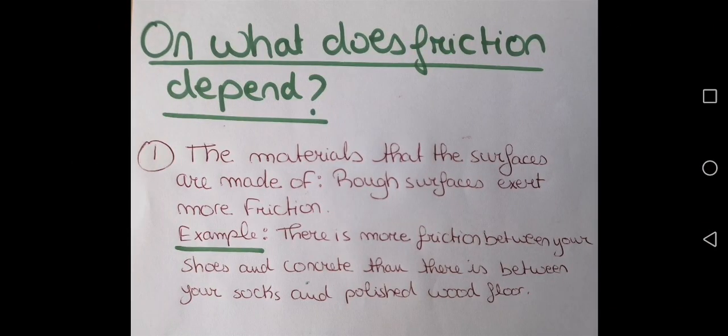On what does friction depend? Friction depends on two factors. First, the materials that the surfaces are made of. Rough surfaces exert more friction than smooth ones. For example, there is more friction between your shoes and concrete than between your socks and a polished wood floor. You can also take the example of sand and ice — sand is rough, so it exerts more friction than ice, which is smooth.